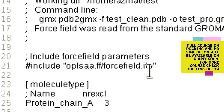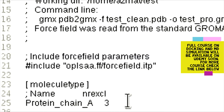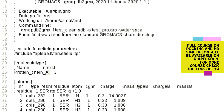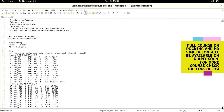The first very important line in this topology file tells us what type of force field was used to prepare it. The second very important piece of information is the molecular type. Under the molecular type heading, we can see that the molecule we are using is a protein and it has only one chain, which is chain A. Under this information we have tabular data with a number of columns.